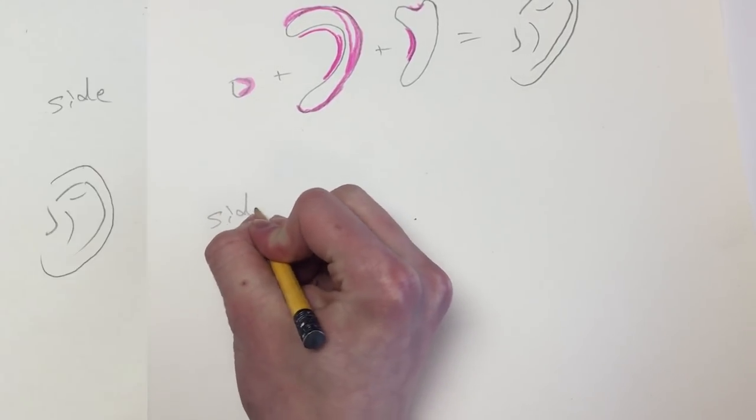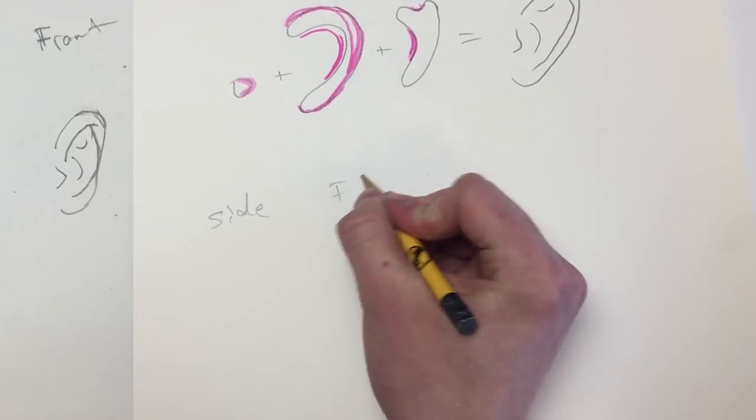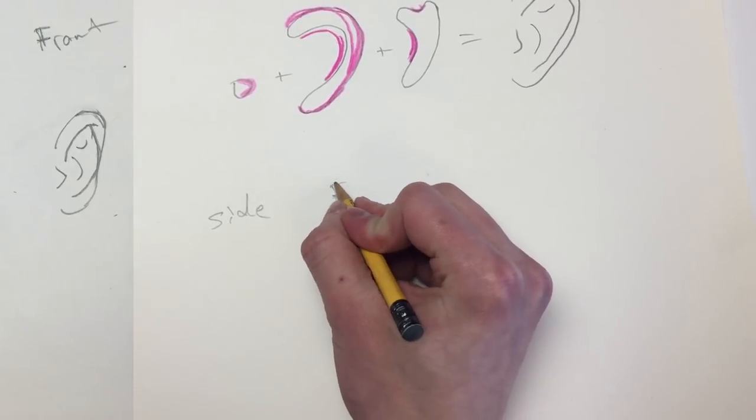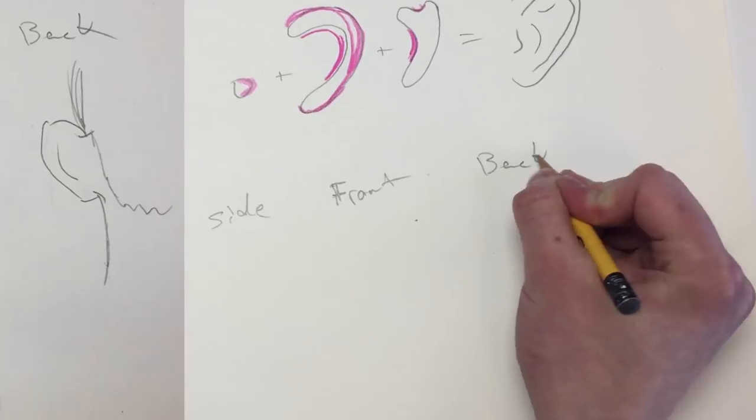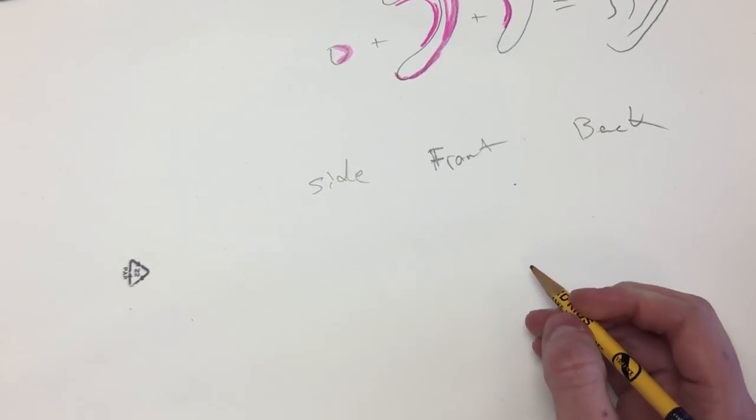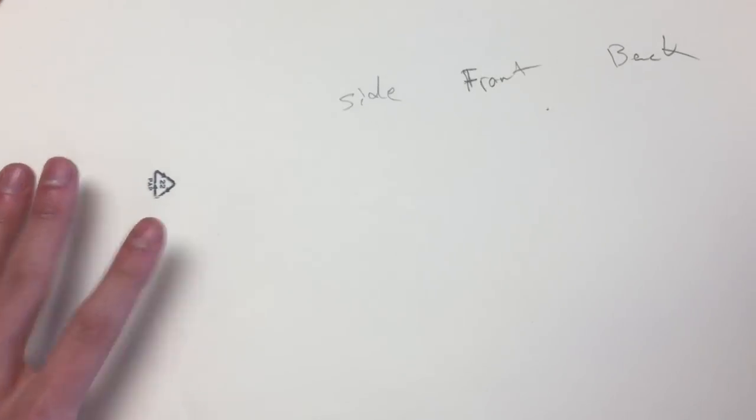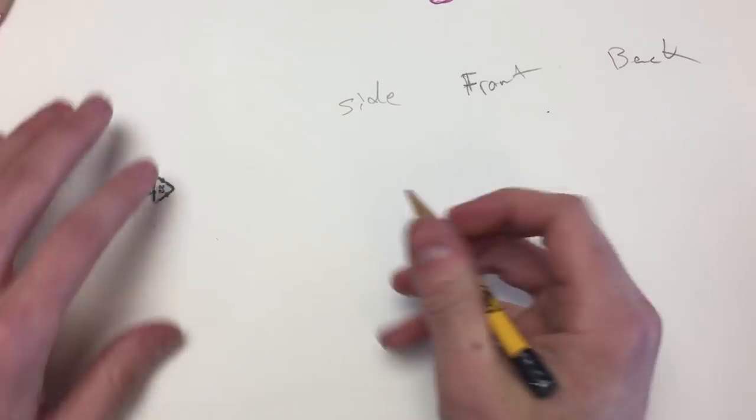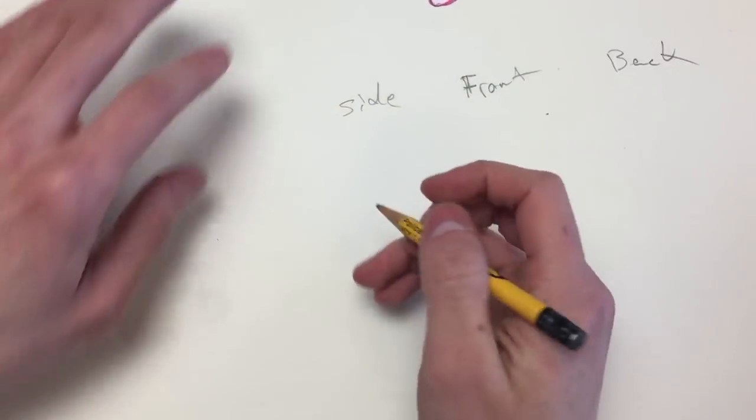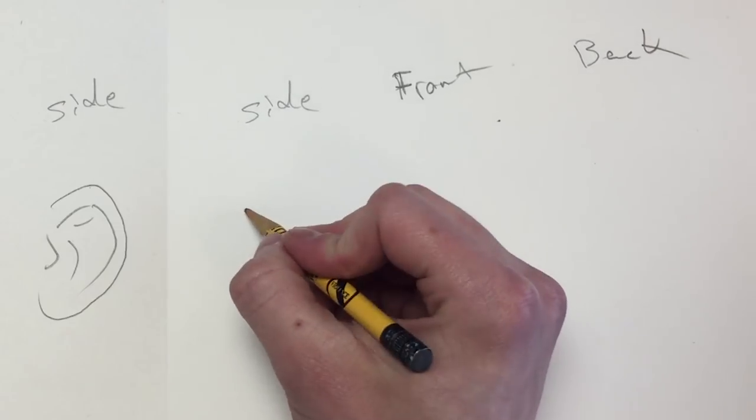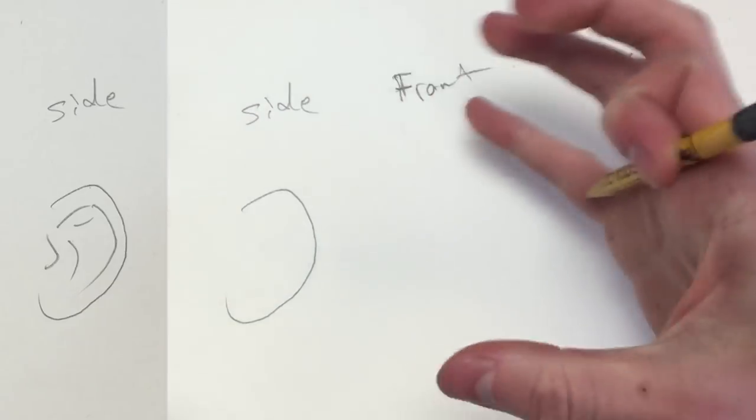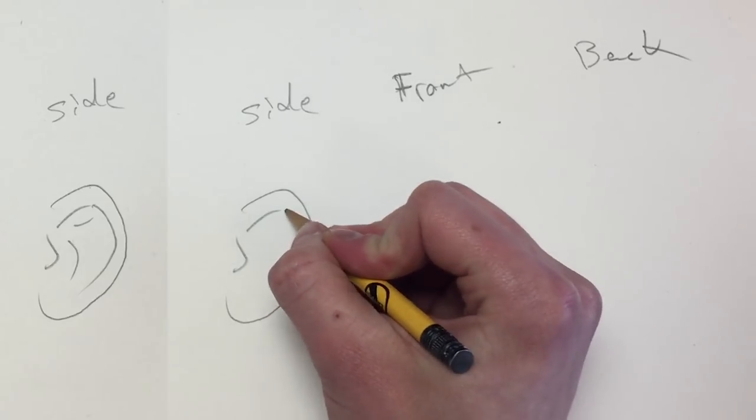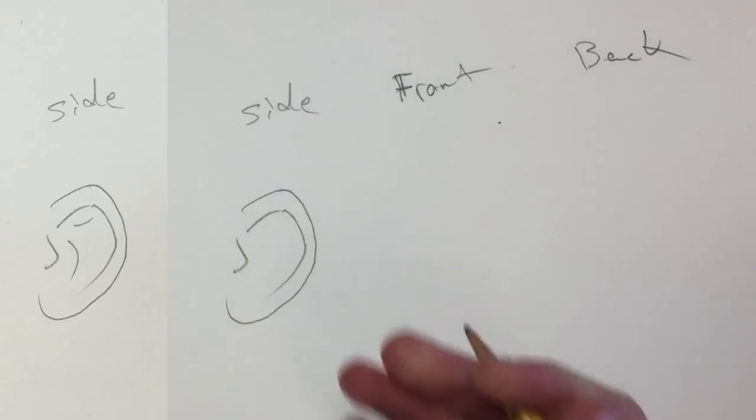We're going to do something cool. So, we're going to do side, front, that's not an F. Shoot. F-R-O-N-T, and back. Okay, watch this. Ready? So, from the side. Come on, man. From the side view, it's going to be a lot wider. And you're going to draw those.